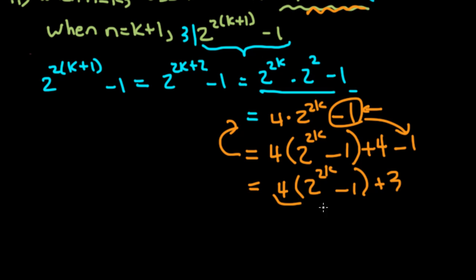And you can see that this term is divisible by 3. And 3 is obviously divisible by 3. So this whole term right here is divisible by 3. So we have shown that if the identity holds for n equals k, then it also holds for n equals k plus 1.